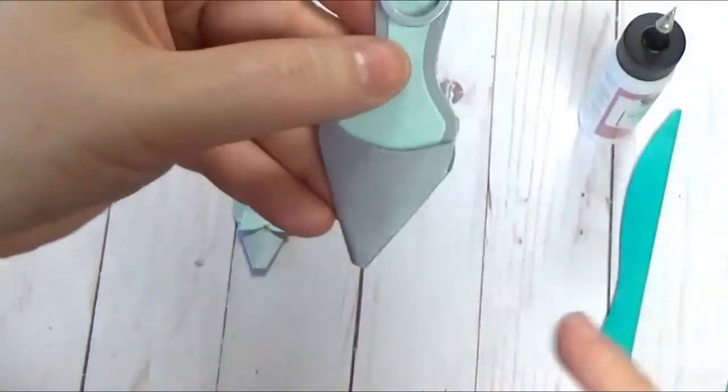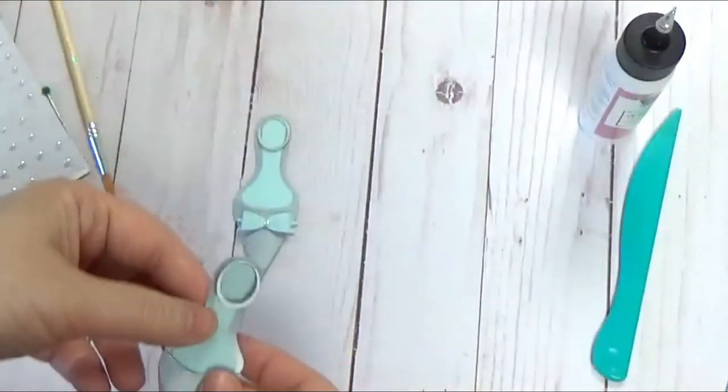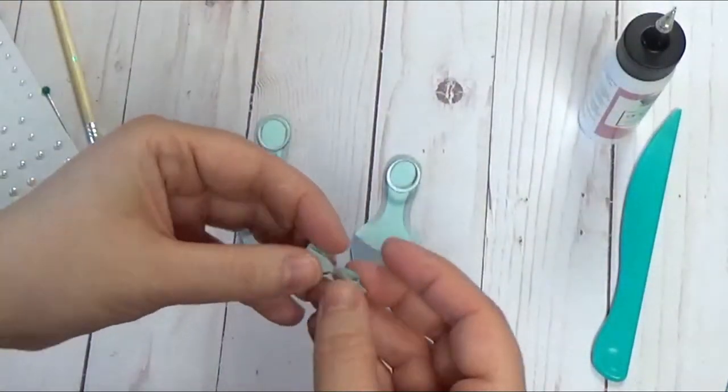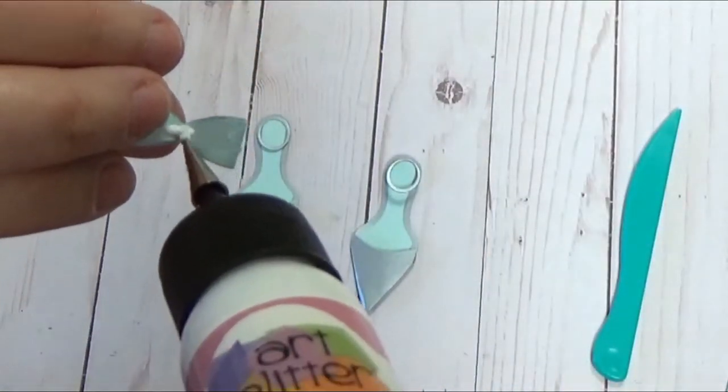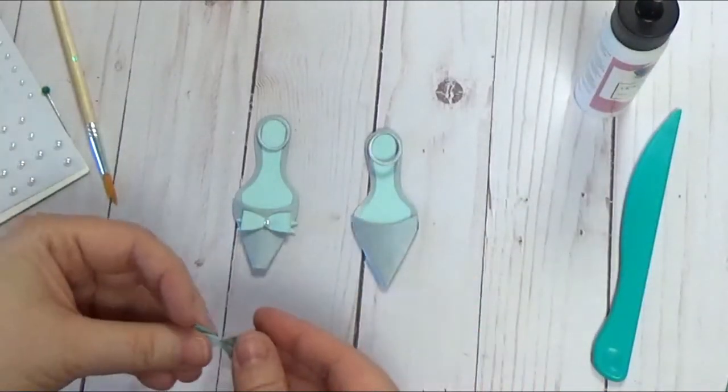Okay, so now we have this. You could put flowers along here, you could do all sorts of things. You don't have to use the bow, but the bow is so cute. So we've got our bow, we're going to put glue on the bottom of that and we're going to put just a little bit down from the top here.